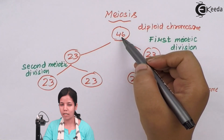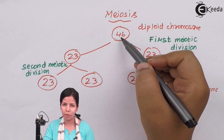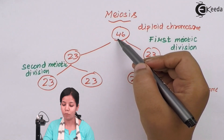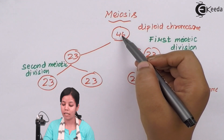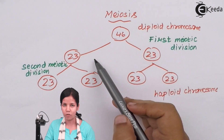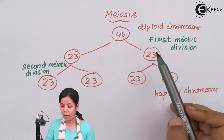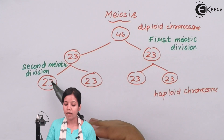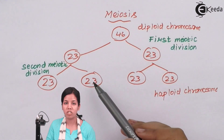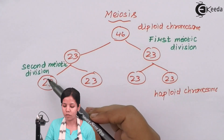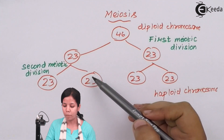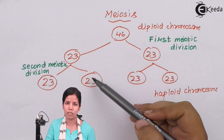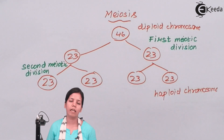During meiotic division, if there are 46 chromosomes in the parent cell — say the sperm cell — it will undergo its first meiotic division, also called the first reduction division, and form cells with 23 chromosomes. Then the process of spermatogenesis takes place, forming two sets of haploid chromosomes. During the second meiotic division, the chromosome number is duplicated through spermatogenesis, or oogenesis in the case of females.